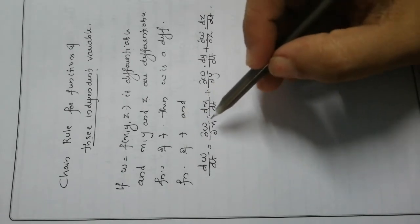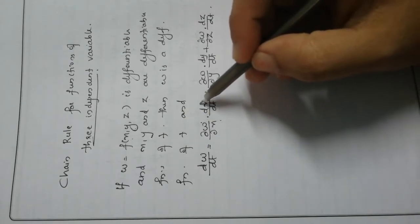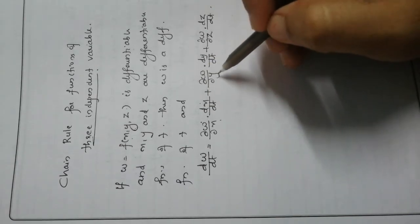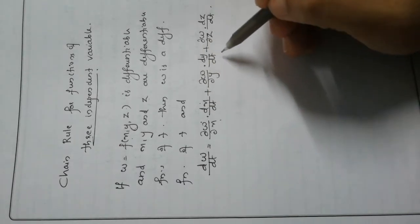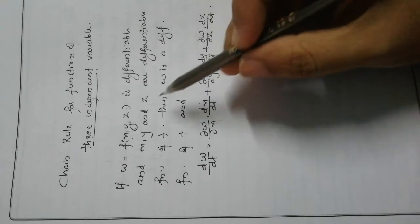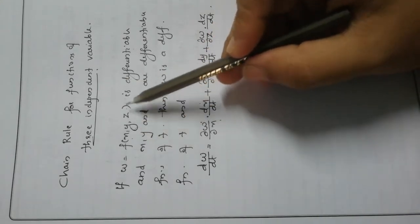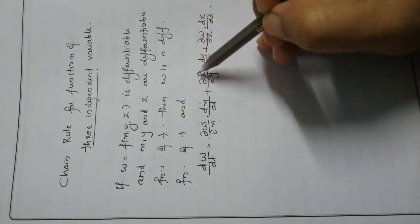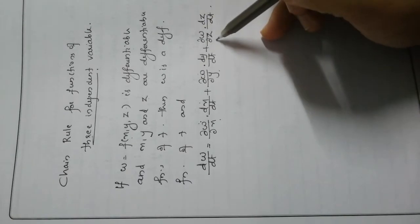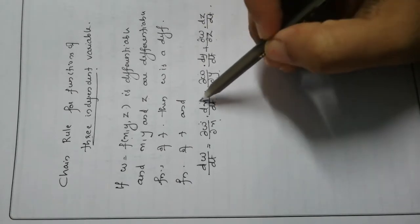dw/dt = (∂w/∂x)(dx/dt) + (∂w/∂y)(dy/dt) + (∂w/∂z)(dz/dt). Here ∂w/∂x, ∂w/∂y, ∂w/∂z are differentiable functions of t, and x is a function of t alone.